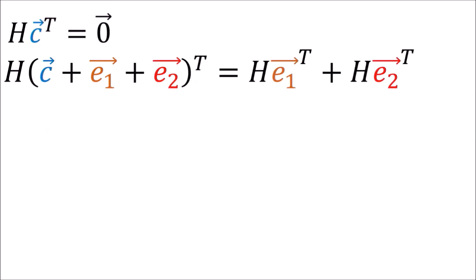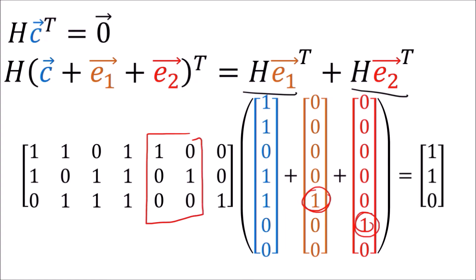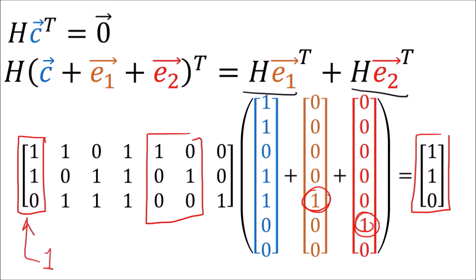However, notice that if two errors happen, we project out the fifth and sixth columns, which add together to give us the syndrome vector of the first column. This is another reason why the Hamming 7-4 code can't correct more than one bit error. If we flip two bits, the parity check matrix gets confused and gives us the wrong syndrome vector — it would incorrectly indicate the error was in the first bit.